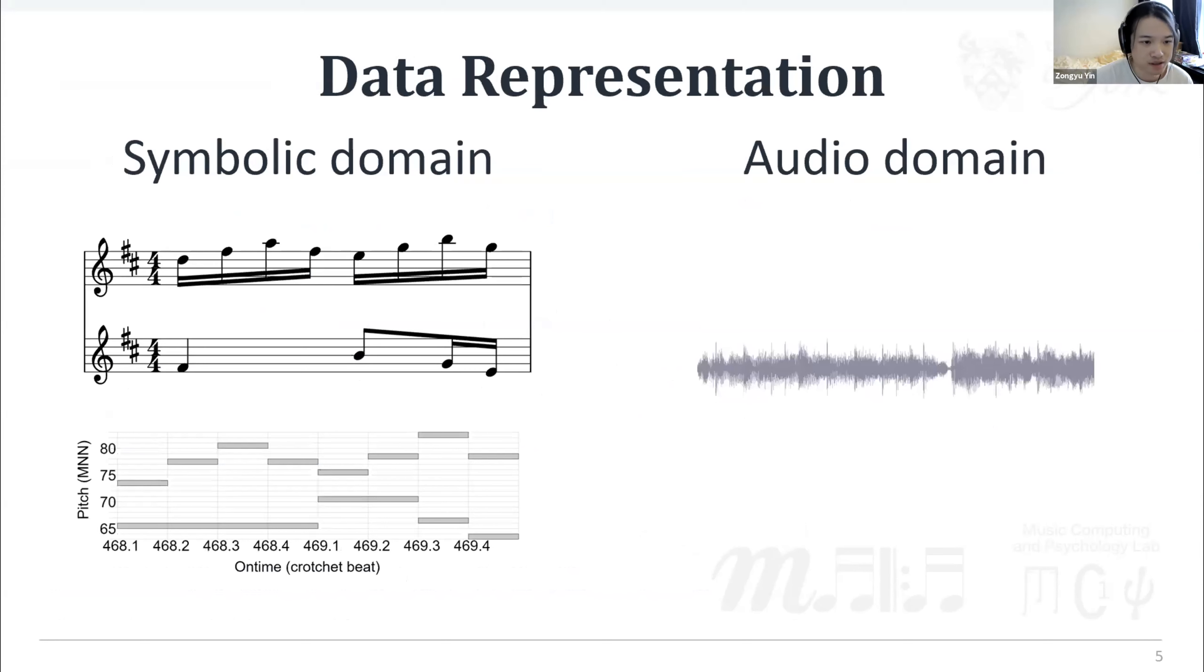Based on the data type of input and output, music generation models can be generally classified into symbolic or audio domain. In symbolic domain, sound objects are represented by a symbolization system like staff notations and the piano roll-based notations. In audio domain, sound objects are represented by raw audio. Here we only focus on the symbolic domain, as shown on the left.